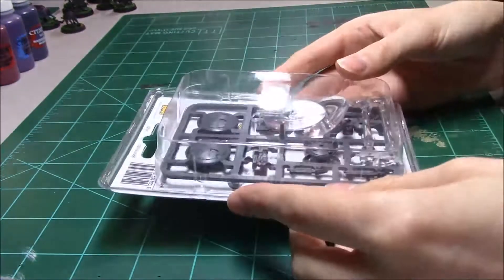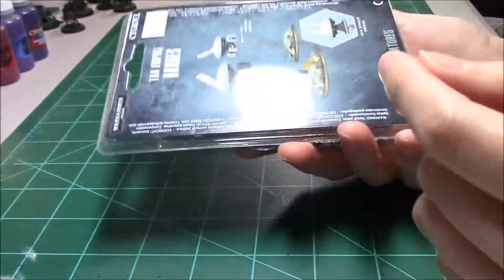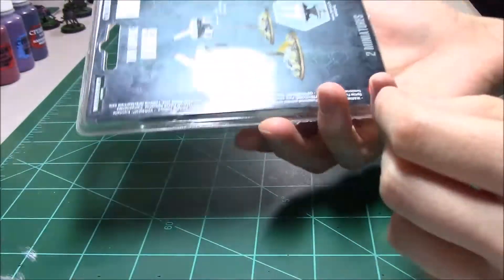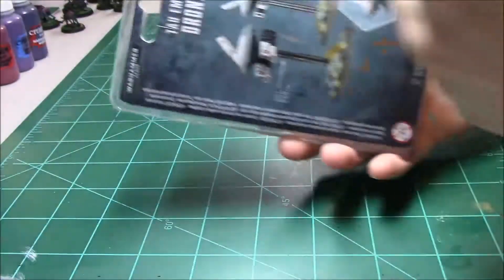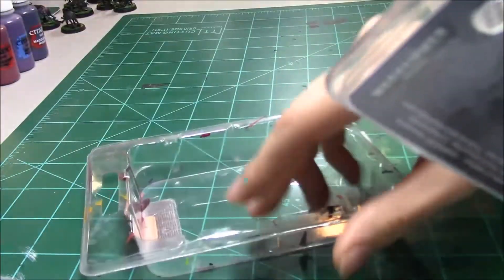You can take one of these blister packs, about exactly this size, and just cut the top off of it. You end up with something like this.